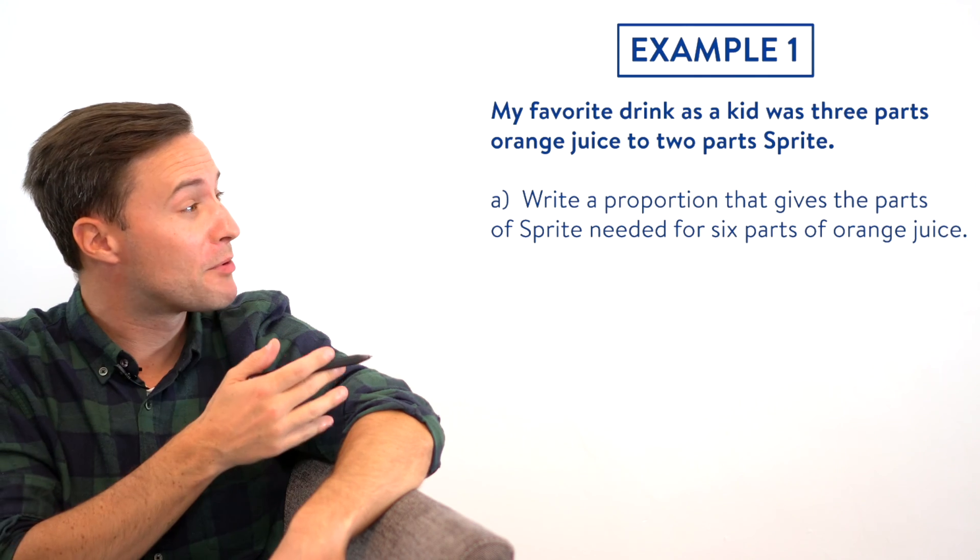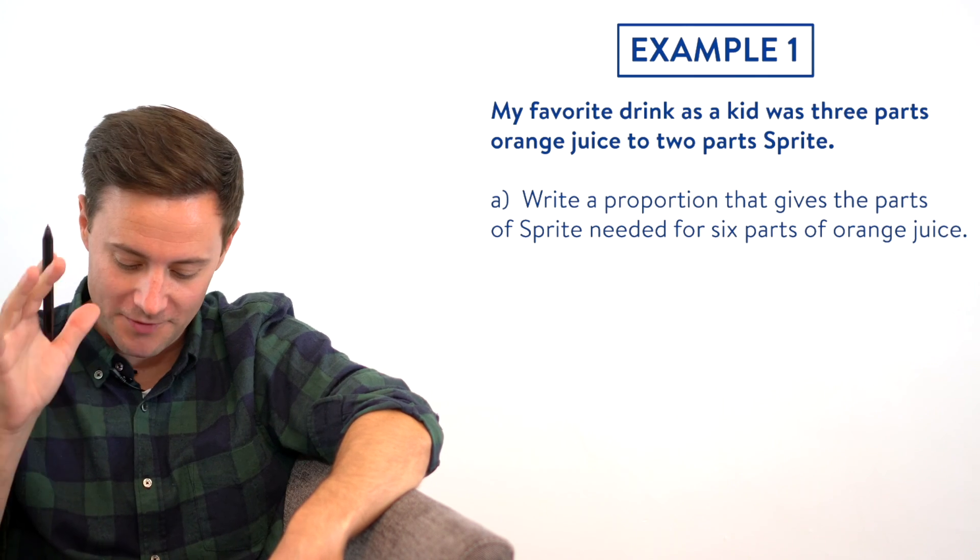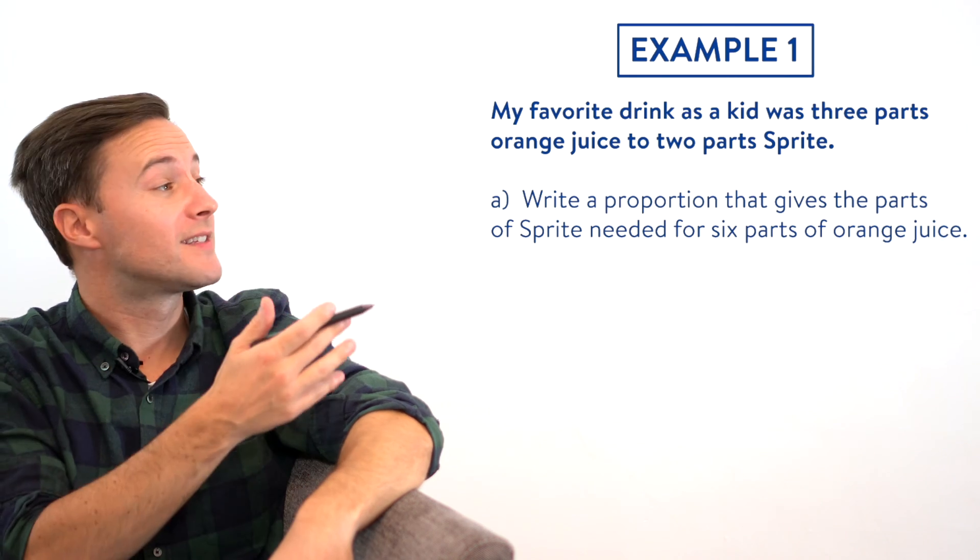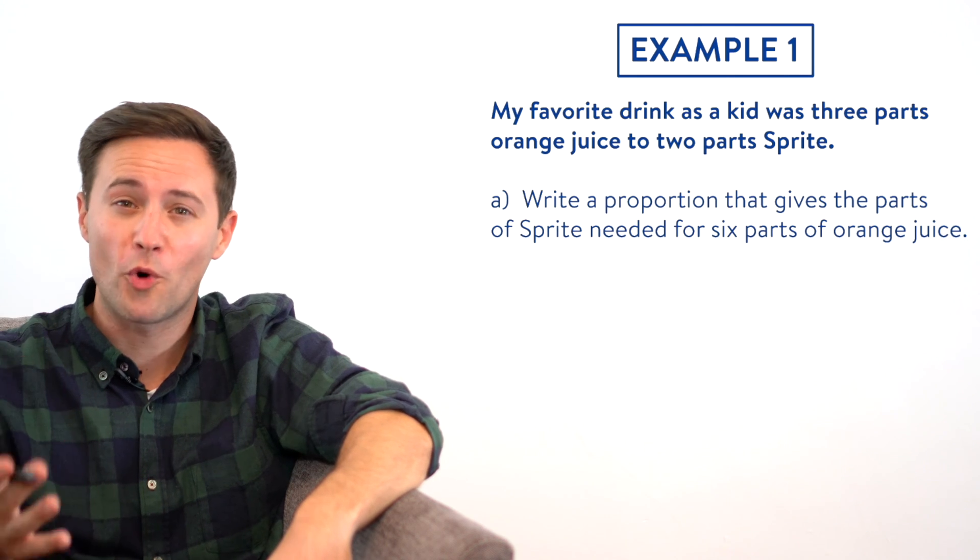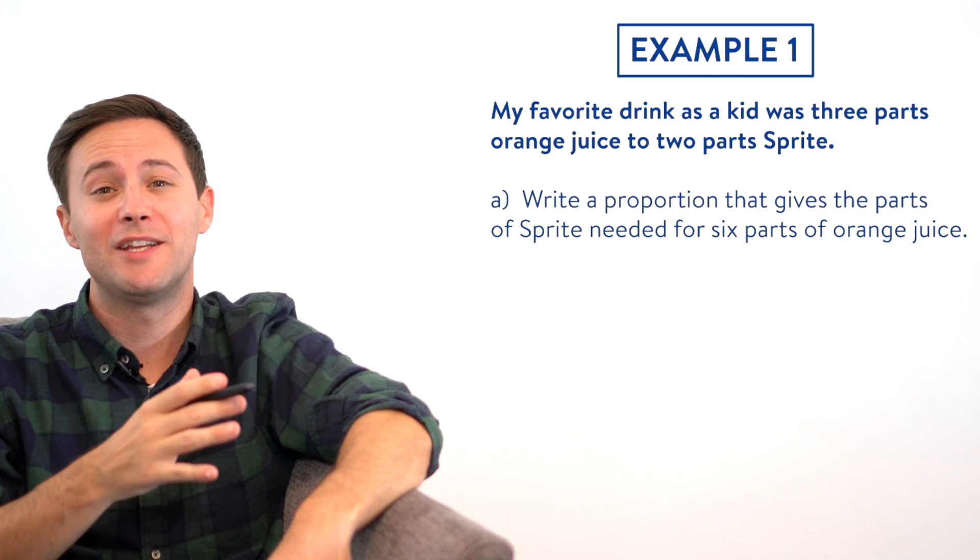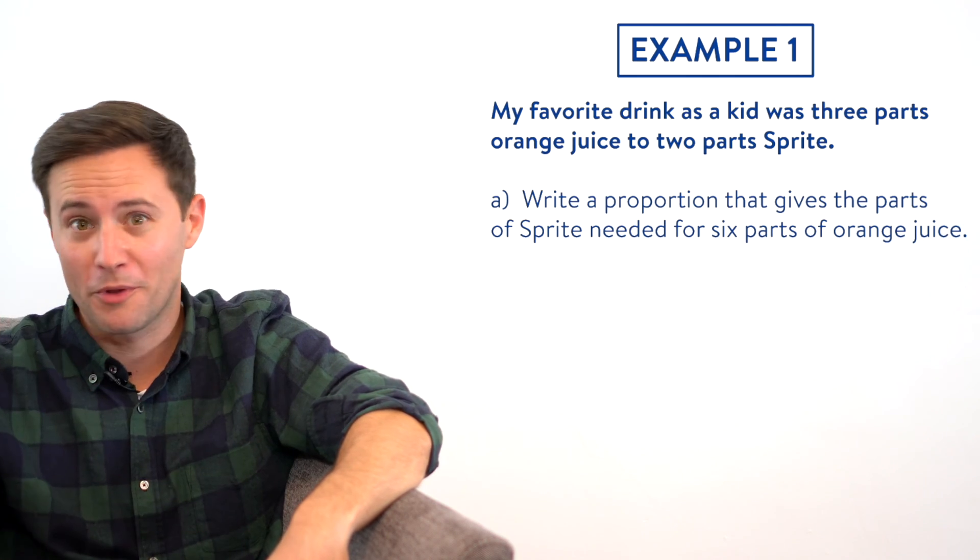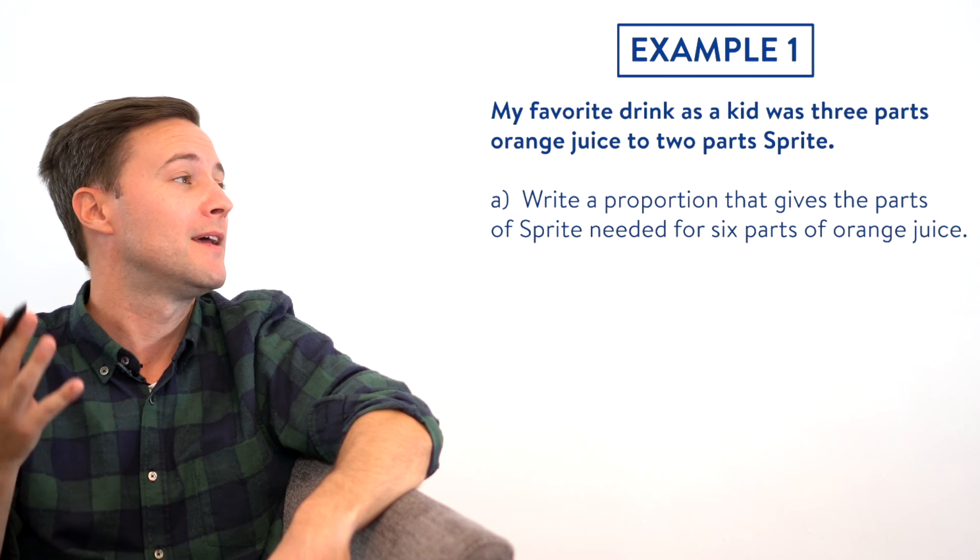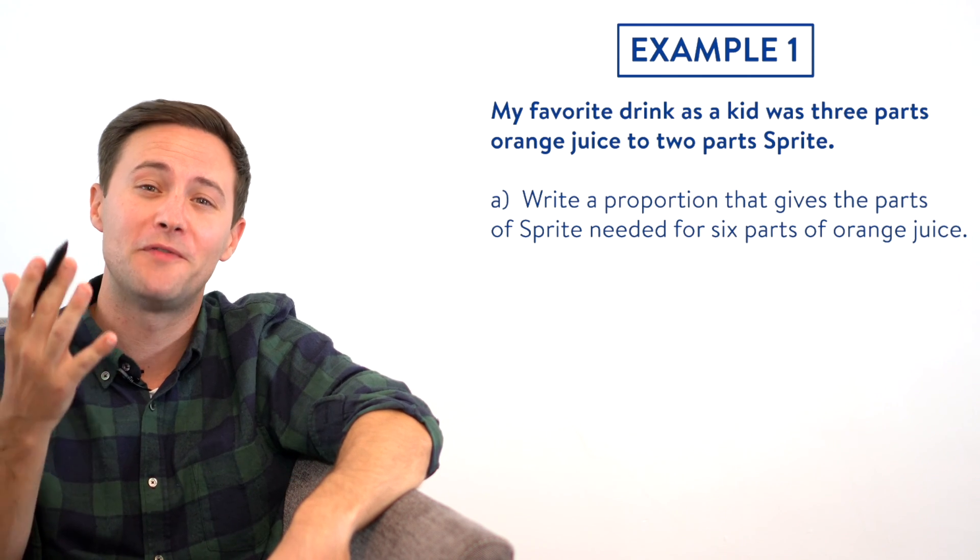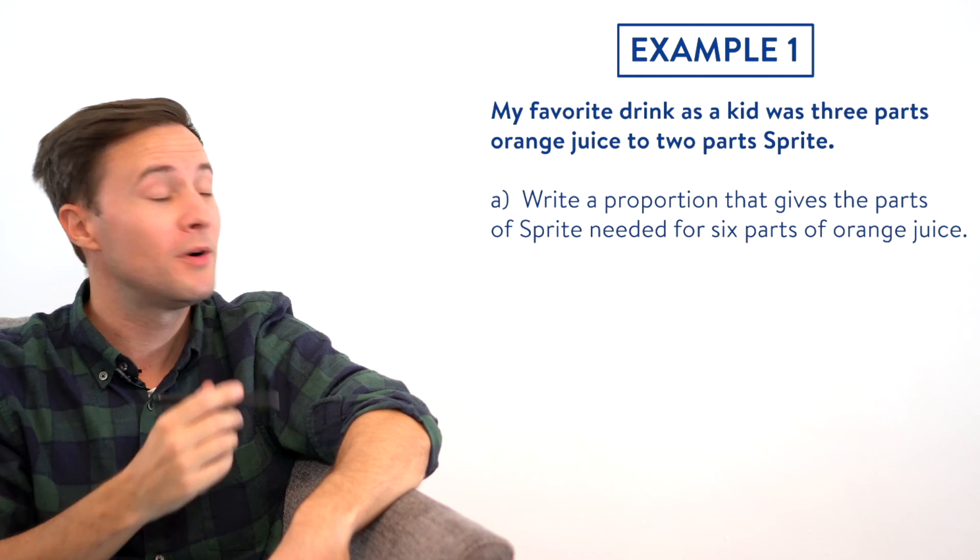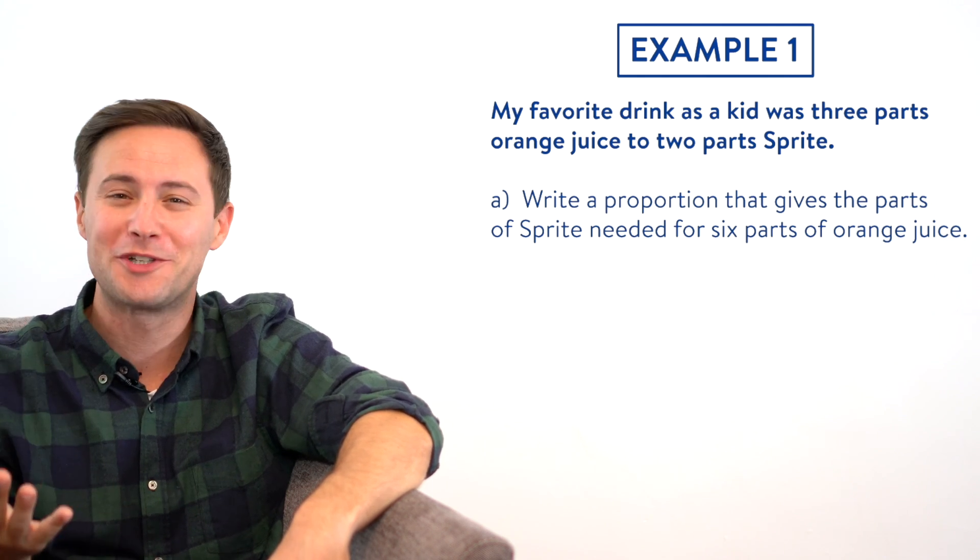And for part A, write a proportion that gives the parts of Sprite needed for six parts of orange juice. This type of problem is really common with proportions. Anytime you're dealing with recipes where you might need to double the recipe or triple the recipe, proportions can help you figure out how much of each ingredient you might need. So let's do that for orange juice and Sprite.